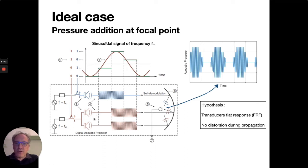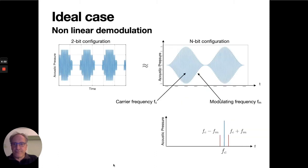If the frequency response of the transducers was flat and there was no distortion during propagation, the resulting sound pressure signal at the focal point would be proportional to the sum of all electrical signals applied to the transducers. In other words, it would be an ultrasonic carrier signal fc whose amplitude is modulated by the sampled and quantized low frequency component—a sinusoidal signal of frequency fm.